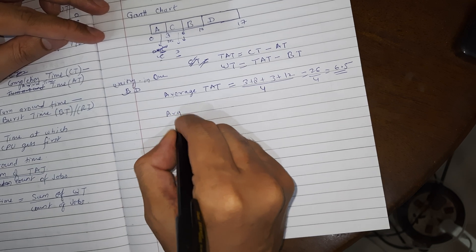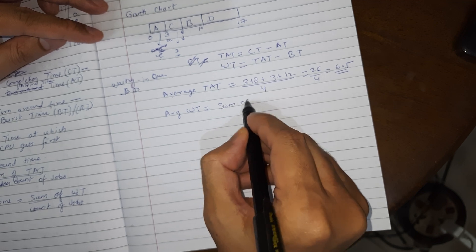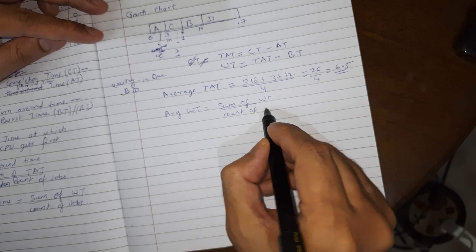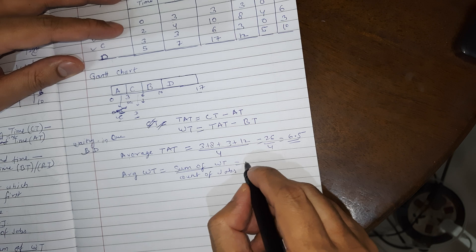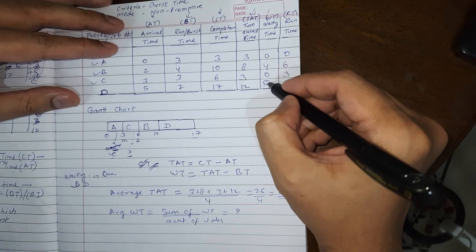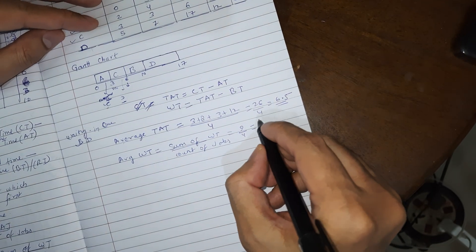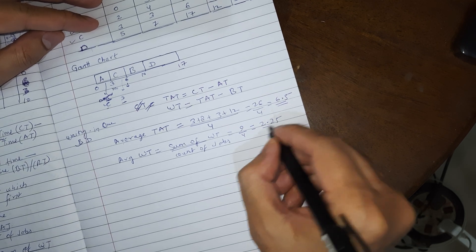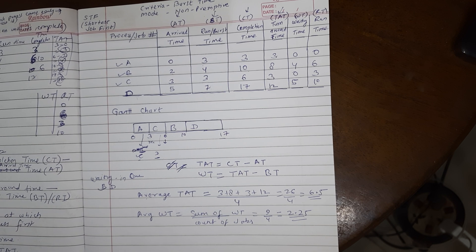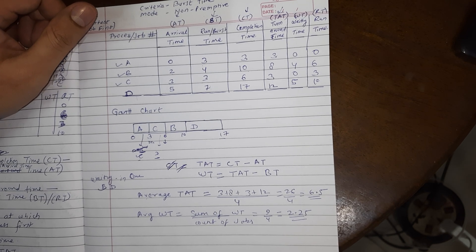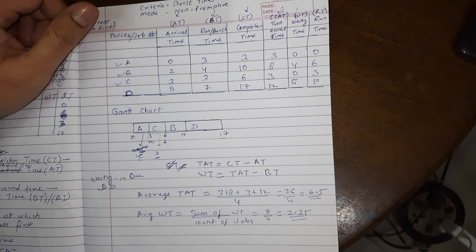The average waiting time is the sum of all waiting times divided by the number of jobs or processes. So: (0 + 4 + 0 + 5) / 4 = 9 / 4 = 2.25 seconds. I hope the SJF method, the Gantt chart, and all calculations are clear. Please give a thumbs up, subscribe to the channel, and all the best for your assignment in the postgraduate diploma in computer applications for operating systems!